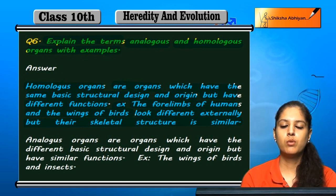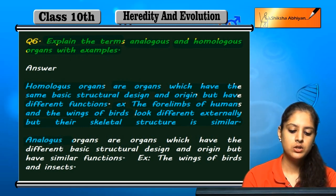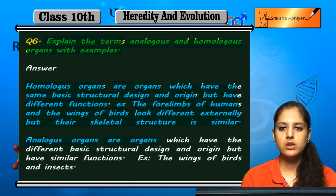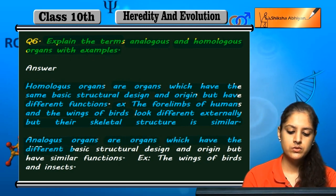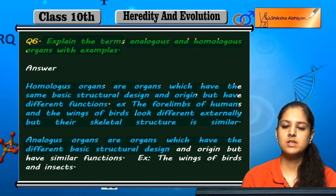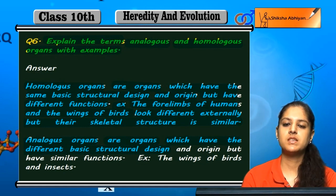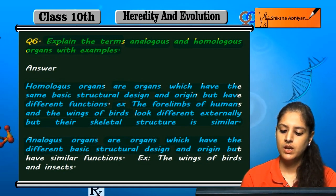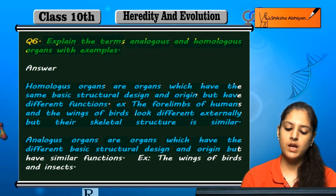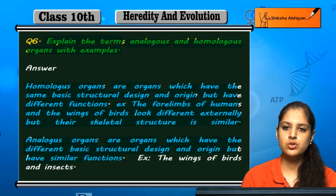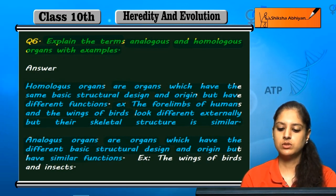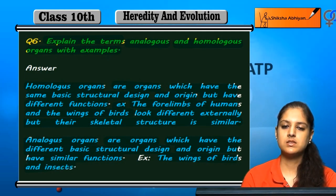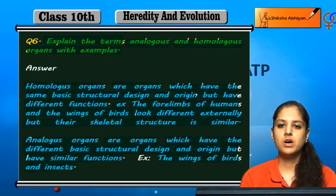Talking about analogous organs — they are organs which have a different basic structural design, and their origin is also different, but their function is the same.